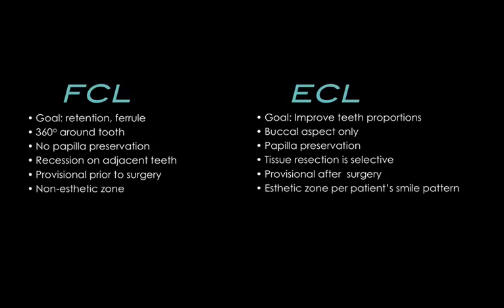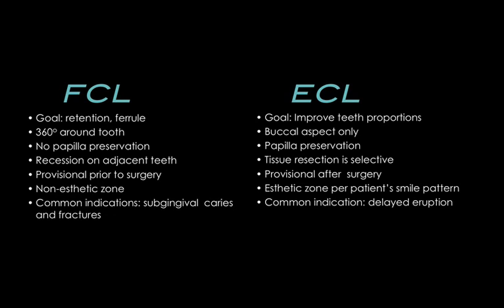Another difference is that functional crown lengthening is not done in the aesthetic zone, because the procedure involves recession on adjacent teeth and creates an asymmetrical gum margin when crown lengthening one or two teeth but not the adjacent ones. With aesthetic crown lengthening, it's done only in the aesthetic zone depending on the smile pattern. For example, if a patient breaks tooth number eight at the gingival margin, we will not perform a functional crown lengthening because that will create a very significant asymmetry between the two central incisors. Functional crown lengthening is recommended in the non-aesthetic, non-visible zone, and the opposite for aesthetic crown lengthening.